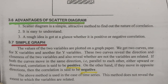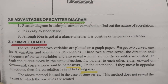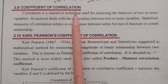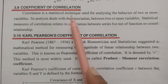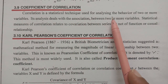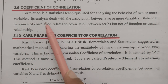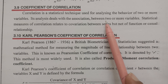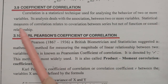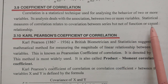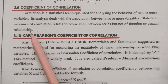This method does not reveal the extent to which the variables are related. Moving on to the mathematical methods, correlation is a statistical technique used for analyzing the behavior of two or more variables. Its analysis deals with the association between two or more variables. Statistical measures of correlation relate to covariation between the series, but not to a functional or causal relationship.